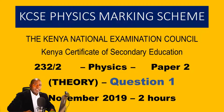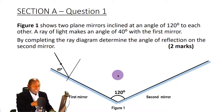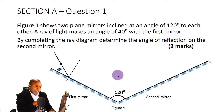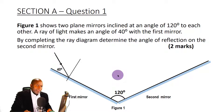Welcome to the KCSE Paper 2 of 2019, Physics Paper 2 of the year 2019, and we go straight to the first question. Figure one shows two plane mirrors inclined at an angle of 120 degrees to each other. A ray of light makes an angle of 40 degrees with the first mirror. By completing the ray diagram, determine the angle of reflection on the second mirror.